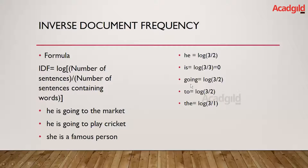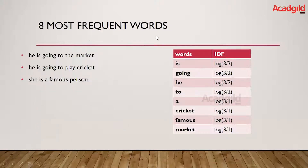Now let us compute the IDF for 'going'. How many times is 'going' present? Two. So I have two in the denominator and three in the numerator: log(3/2). Please note that every word will have a unique IDF value, and it will have just one IDF value with respect to all the sentences present. That is the most important thing to note about inverse document frequency.